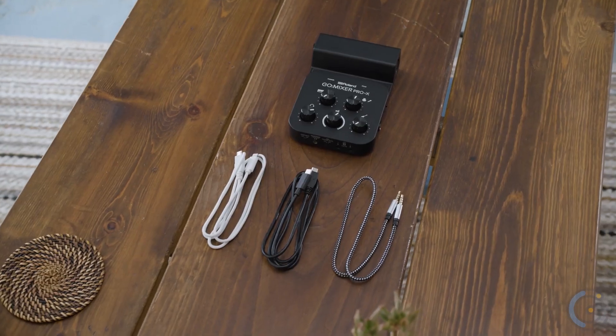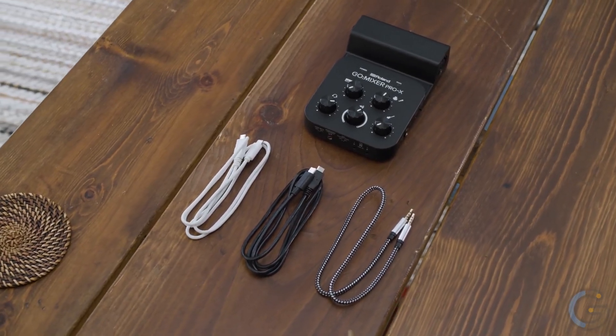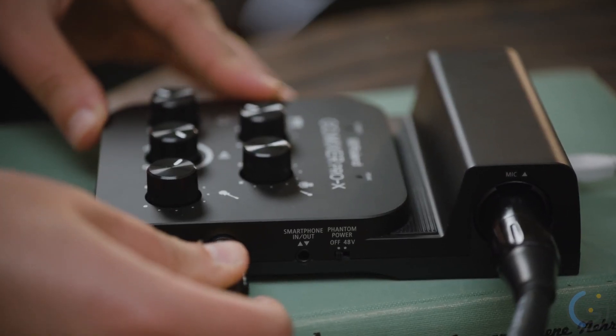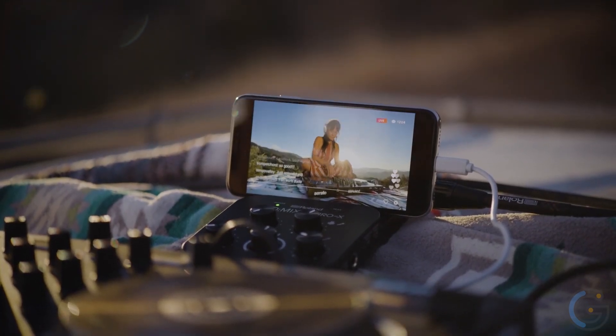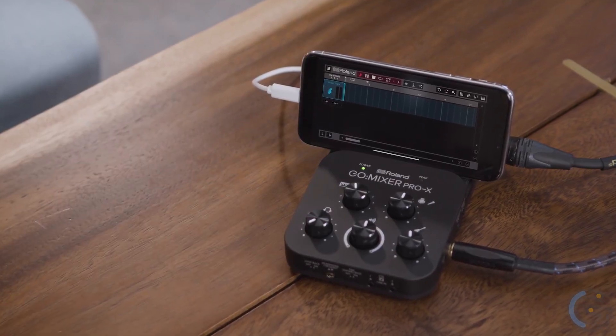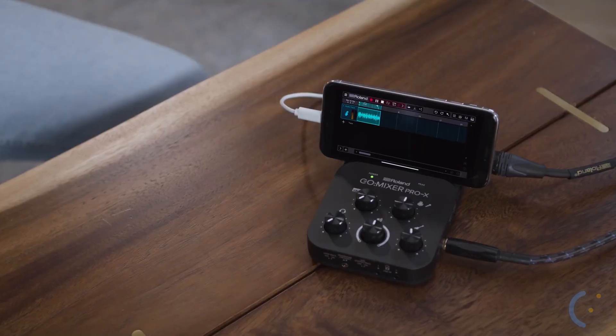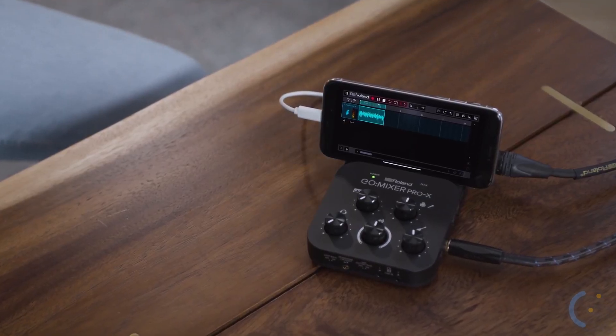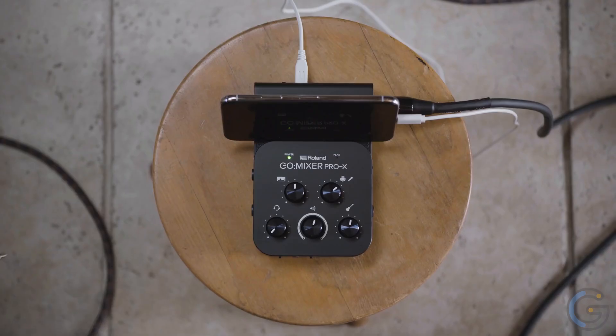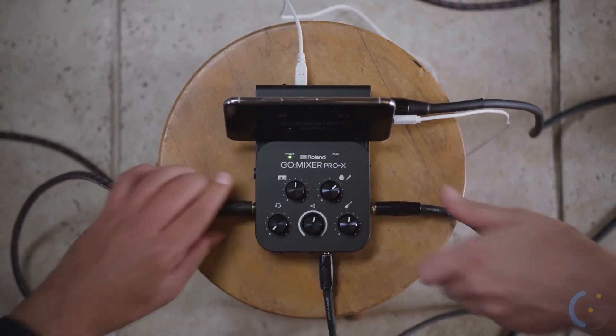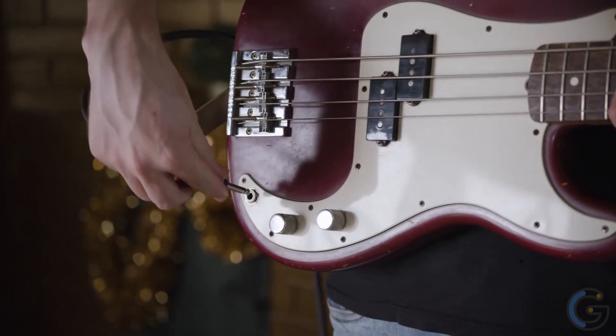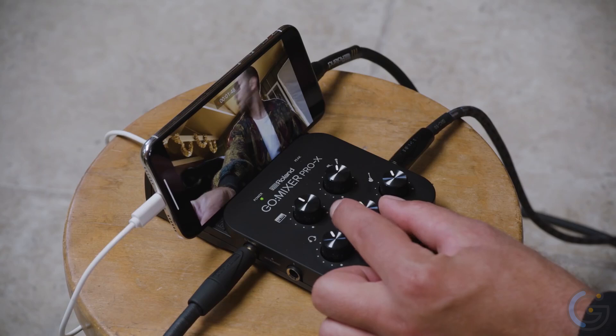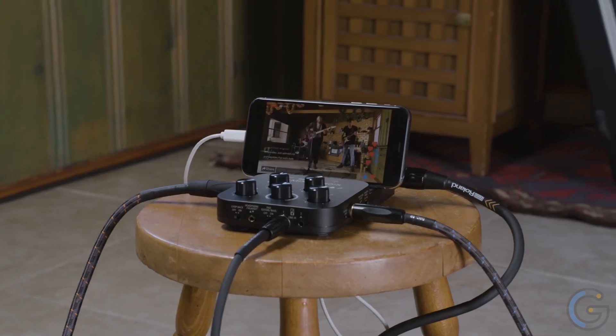Moreover, the Go Mixer Pro X comes with cables for connecting pretty much any kind of iOS or Android mobile device. You can connect it digitally to USB-C or Lightning devices. Alternatively, go analog with the TRRS cable. Finally, with its palm-sized form factor and the ability to charge from your mobile device, this gadget is made for on-the-go creation.